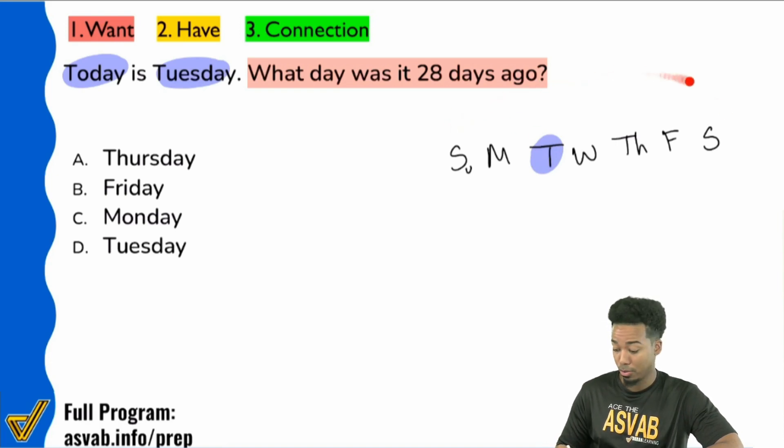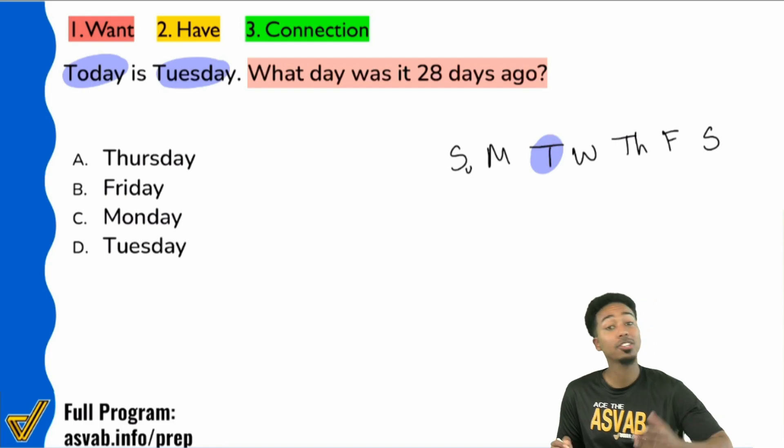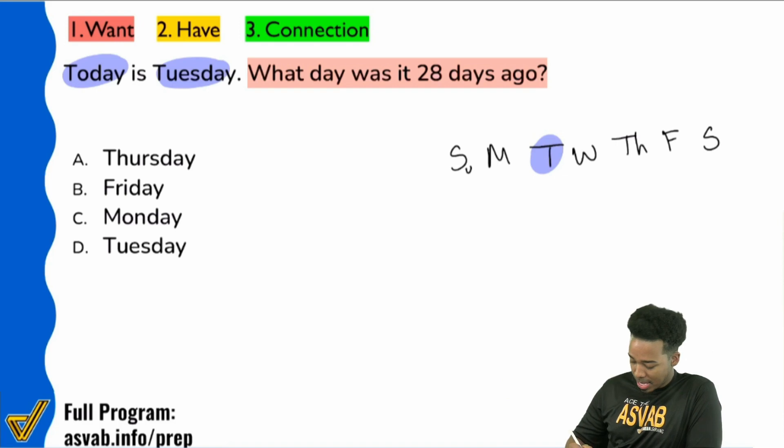One, two, three, four, five, six, seven, eight, nine, ten, eleven, twelve, thirteen, fourteen, fifteen, sixteen, seventeen, eighteen, nineteen, twenty, twenty-one, twenty-two, twenty-three, twenty-four, twenty-five, twenty-six, twenty-seven, twenty-eight. What day was it 28 days ago guys? If I did it that way, if we did this what day would it be? If we did that, yeah that would be Tuesday 28 days ago. That would be the answer.